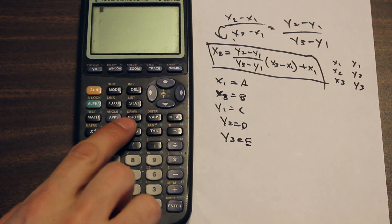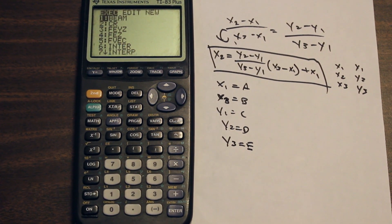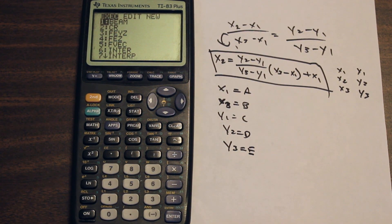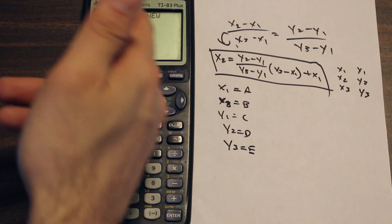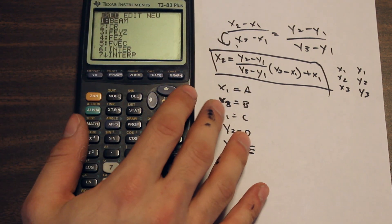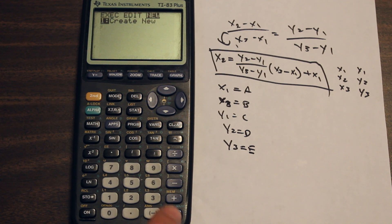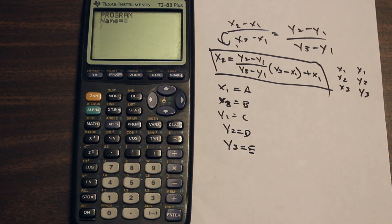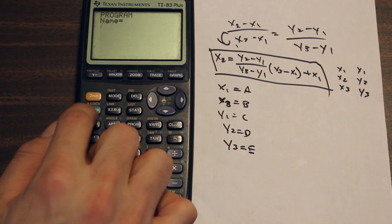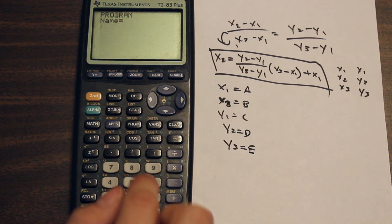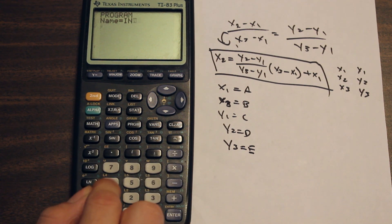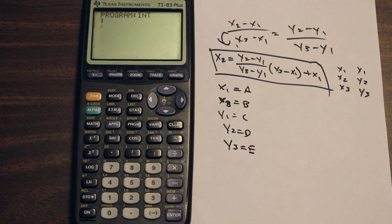The calculator is on, and there's a button called PROGRAM. When you first push it, you'll see all the programs I've already written — you can name your programs and store a bunch of them. We're going to go to NEW to create a new program. It'll ask for a name — use the ALPHA button to type letters. We'll call this one INT, but you can call it whatever you want as long as you know which one's which.